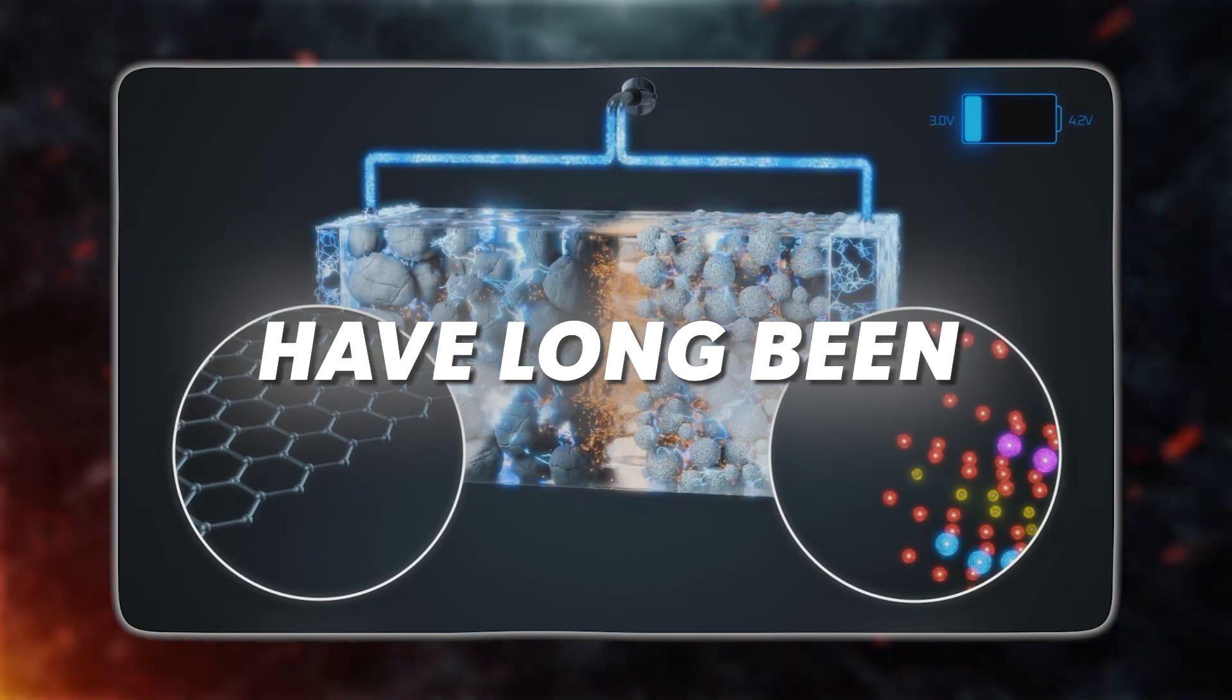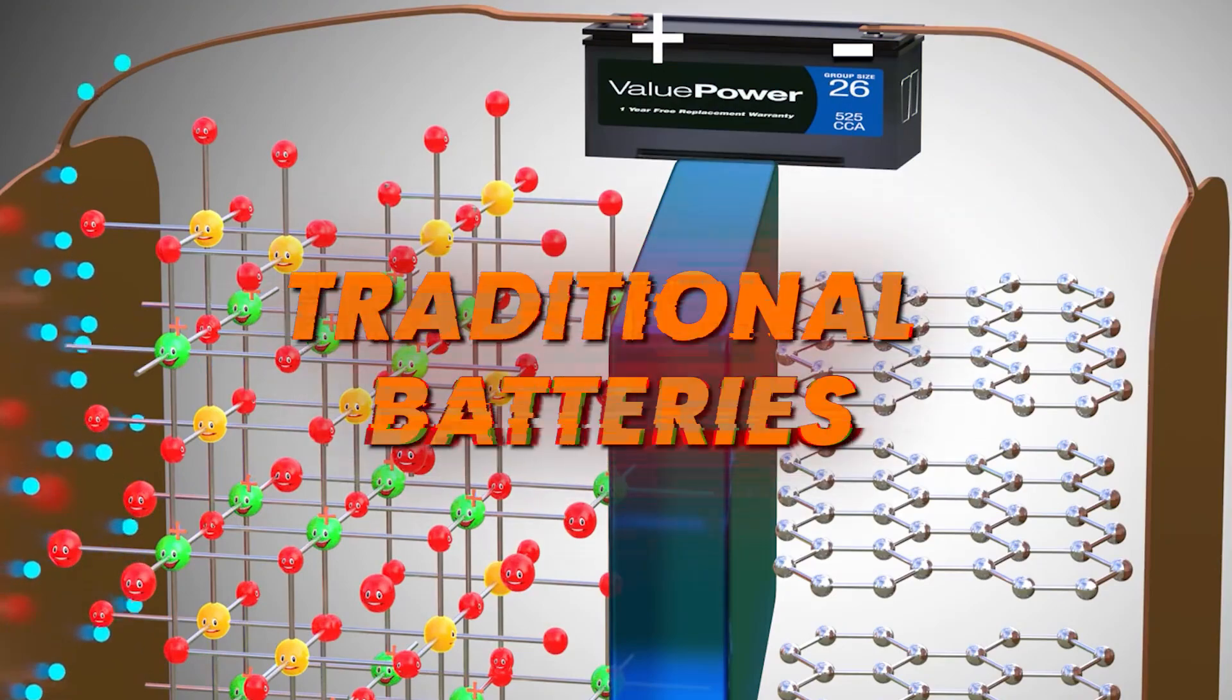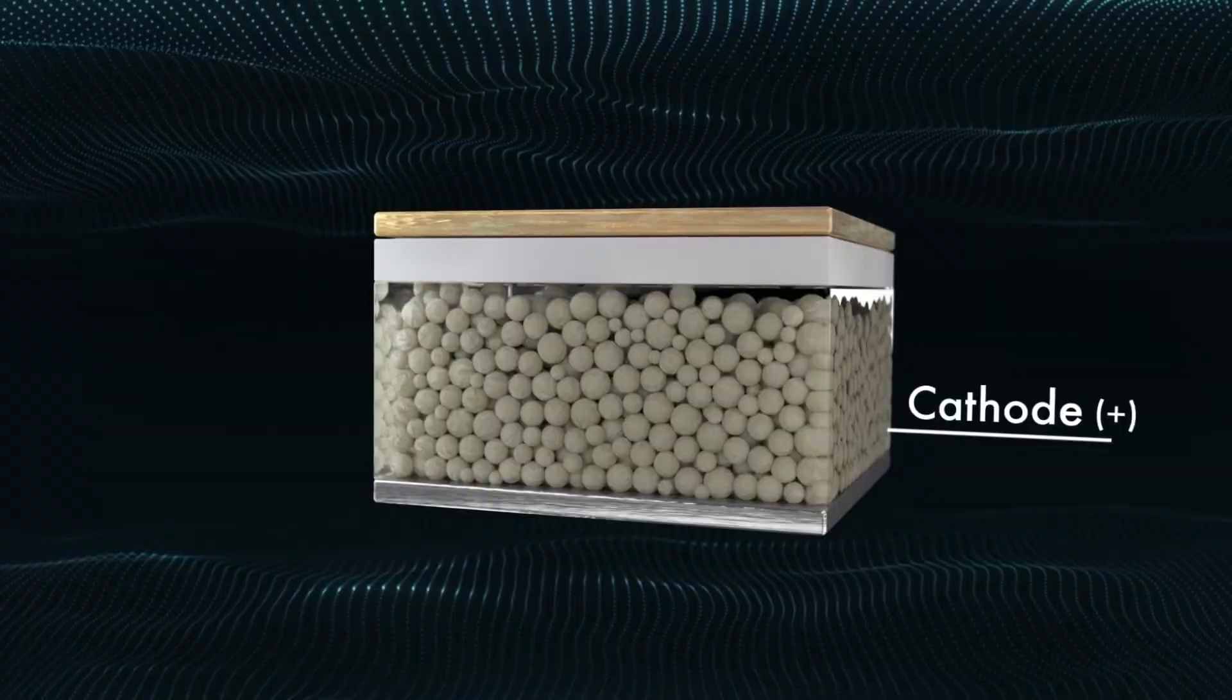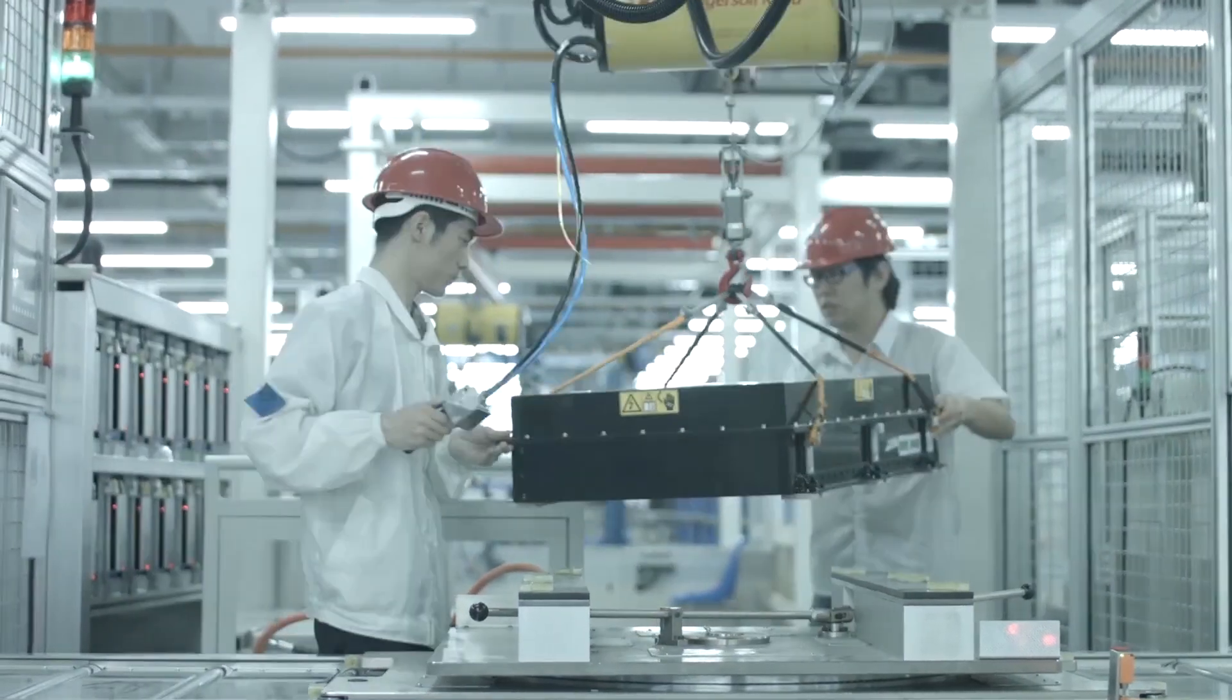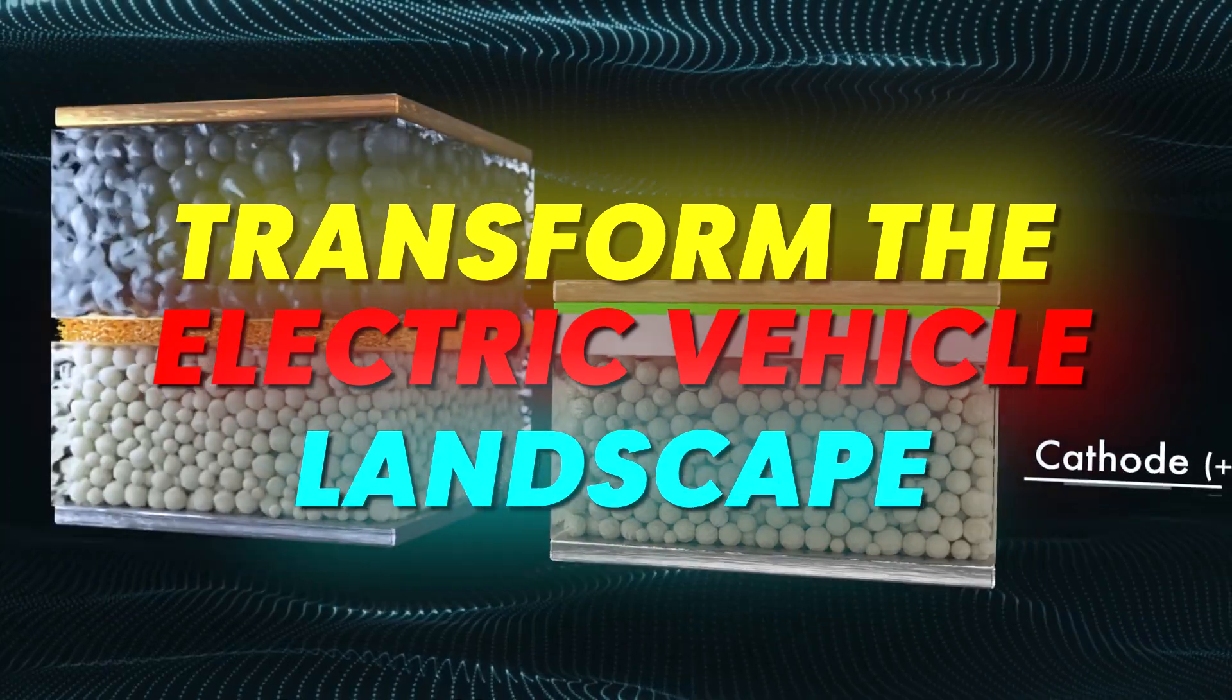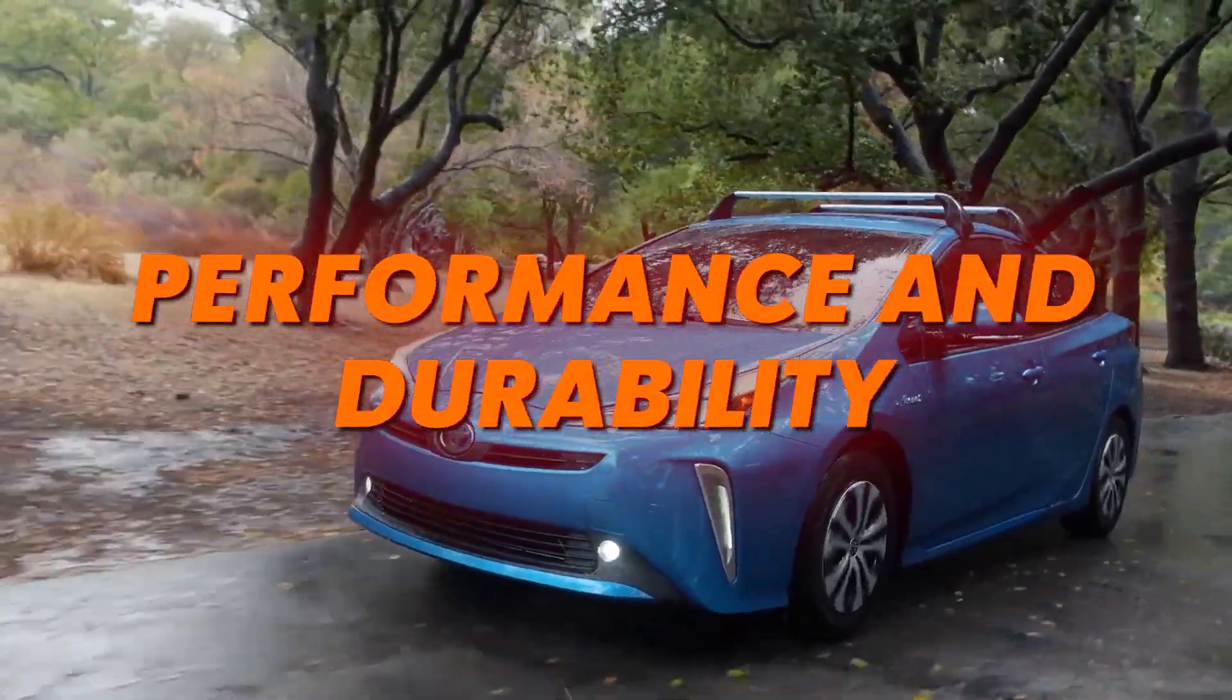As Toyota emphatically puts it, solid-state batteries have long been seen as a potential game-changer for electric cars. Unlike traditional batteries, which depend on a liquid electrolyte to move electrons between the cathode and anode, Toyota's solid-state batteries feature a cutting-edge gel-like electrolyte. While they haven't disclosed the exact material used, this breakthrough is poised to transform the electric vehicle landscape, ushering in an era of unprecedented performance and durability.